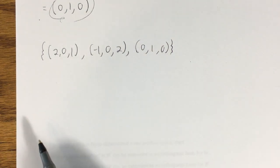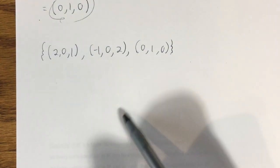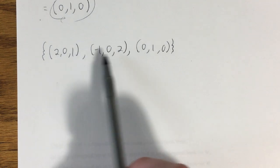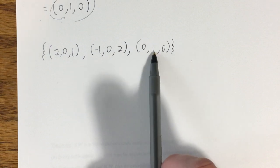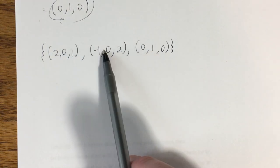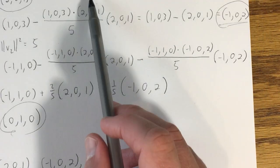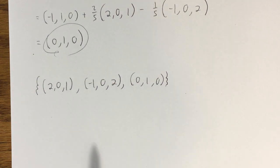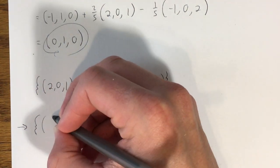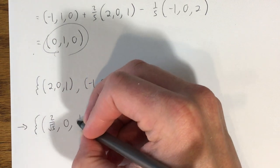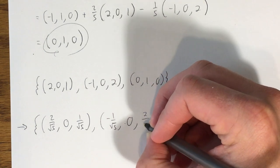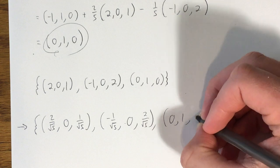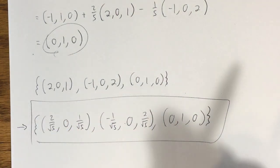As a final step, we need to normalize every vector in this set so that we have not just an orthogonal basis, but an orthonormal basis. This vector (0, 1, 0) we can clearly see is already a unit vector, so it stays the same. Each of the other two vectors has norm squared equal to 5, so we divide by root 5, giving us the orthonormal basis: (2/√5, 0, 1/√5), (-1/√5, 0, 2/√5), and (0, 1, 0).